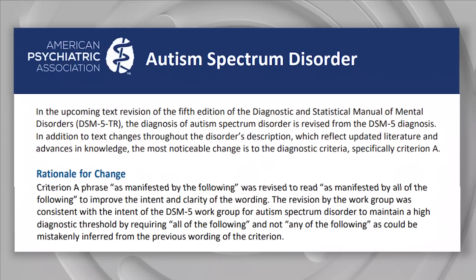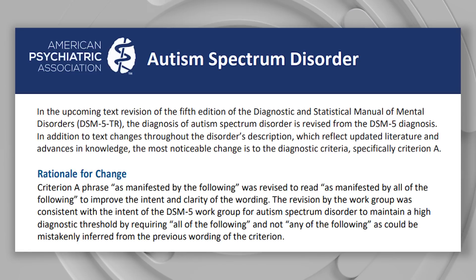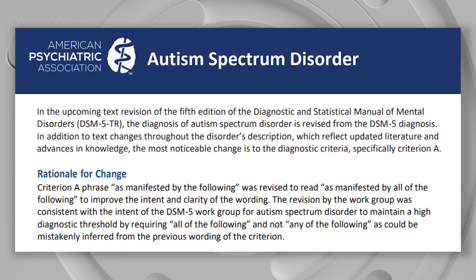A lot of the changes in language are pretty universal for the DSM-5-TR. They basically went through and wanted to be more culturally relevant and sensitive. The rationale for the Criterion A change: the phrase 'as manifested by the following' was revised to read 'as manifested by all of the following' to improve the intent and clarity of the wording. The revision was consistent with the intent of the DSM-5 work group for autism spectrum disorder to maintain a high diagnostic threshold by requiring all of the following, and not any of the following, as could be mistakenly inferred from the previous wording.